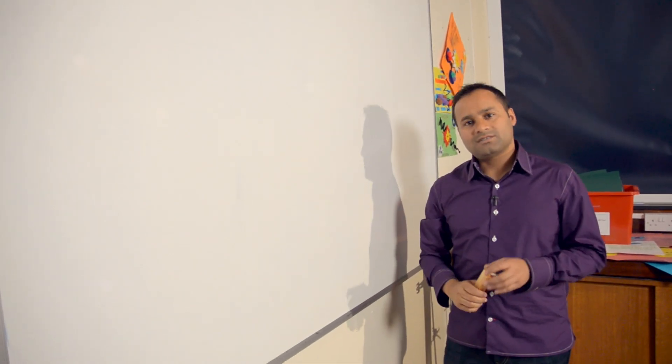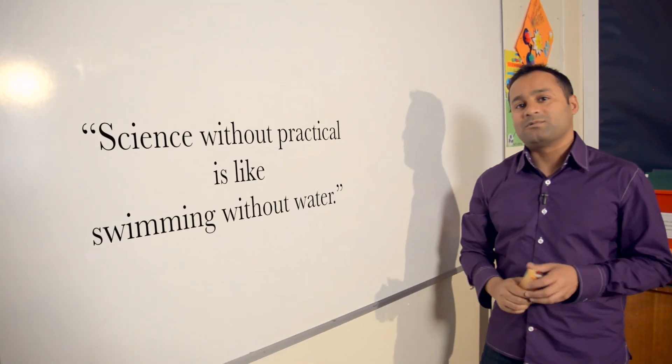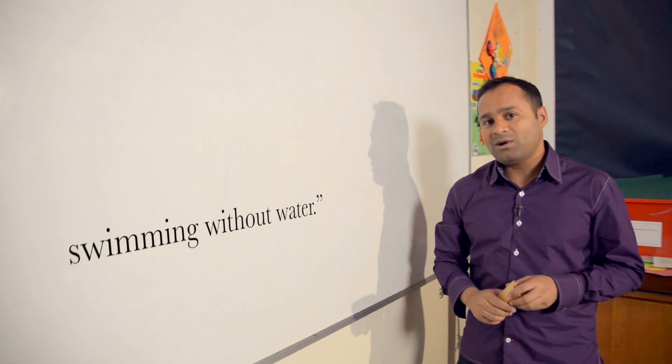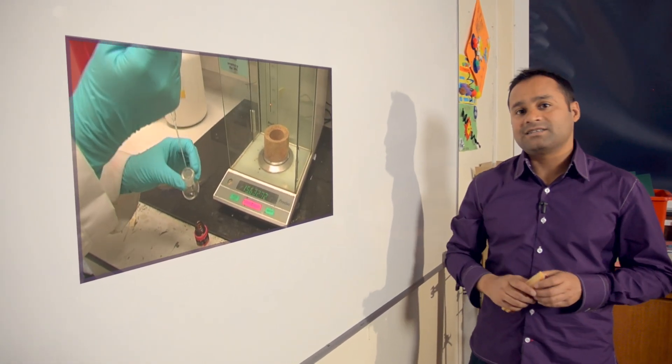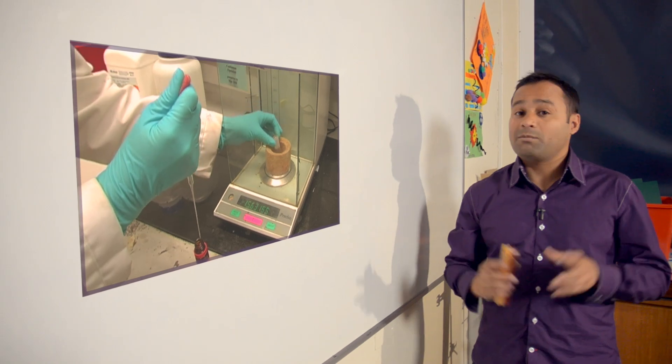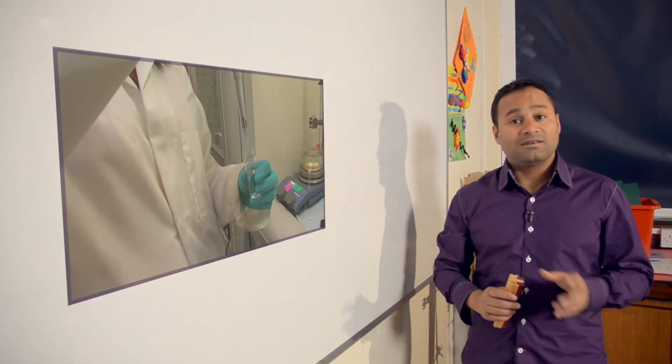Practical work is often seen as an intrinsic part of science education. As one teacher put it, science without practical is like swimming without water. Now, practical inquiry, observing natural phenomena, and making use of standard scientific techniques are a large part of what professional scientists do, so these things should play a part in learning science at school.